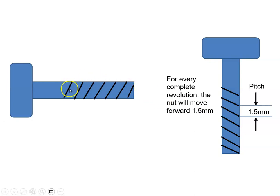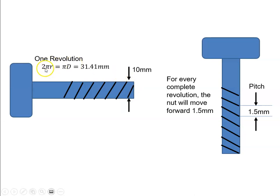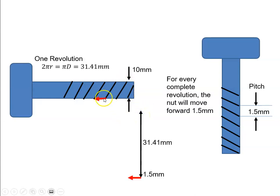So let's have a look at it over here. Here's our bolt again — we're going to assume it has a diameter of 10 millimeters and the pitch is 1.5 millimeters. When the nut travels one full revolution, that distance is the circumference of the bolt, which is π times the diameter — 10π, which is 31.41 millimeters. So when the nut travels 31.41 millimeters in this direction, it will actually move forward 1.5 millimeters — the pitch distance.